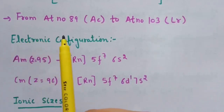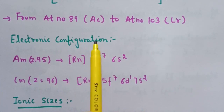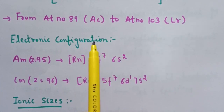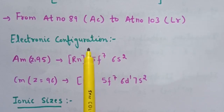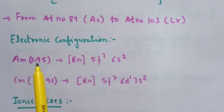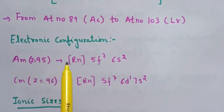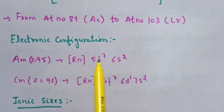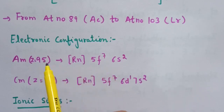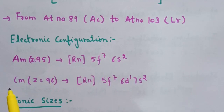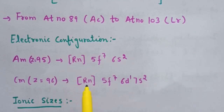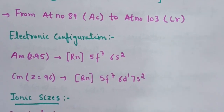The irregularities in the electronic configuration of actinoids, like those of the lanthanoids, are related to the stabilities of f⁰, f⁷, and f¹⁴ configurations. For atomic number 95, americium, the electronic configuration is [Rn] 5f⁷ 7s², where f is half-filled and therefore stable. Similarly, for curium (atomic number 96), the electronic configuration is [Rn] 5f⁷ 6d¹ 7s².